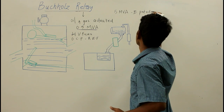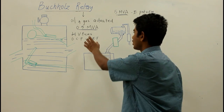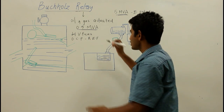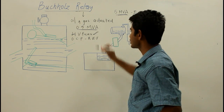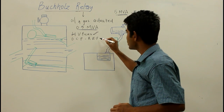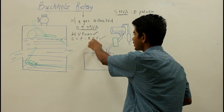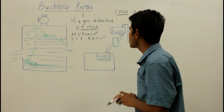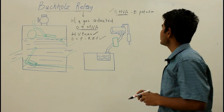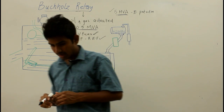For transformers with a rating more than 5 MVA, differential protection can be used. To summarize: below 0.5 MVA, high voltage fuses are used; for large and important distribution transformers, overcurrent protection along with restricted earth fault protection is used; and for higher rated transformers above 5 MVA, differential protection can be used.